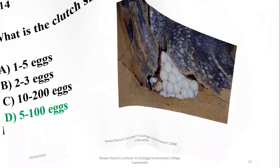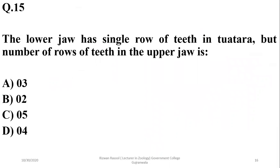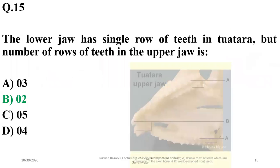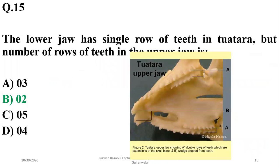Question thirteen: in tuatara (Sphenodon), the lower jaw has a single row of teeth, but the number of rows of teeth in the upper jaw is two. The correct option is beta — tuatara have two rows in the upper jaw and a single row in the lower jaw.